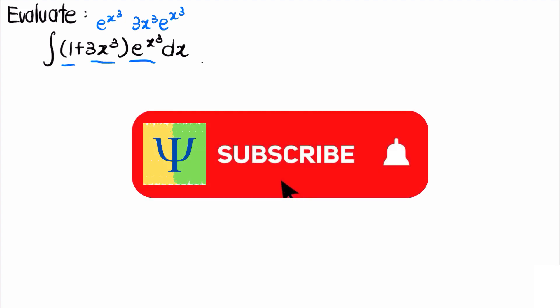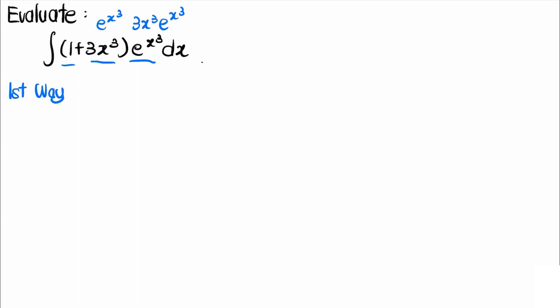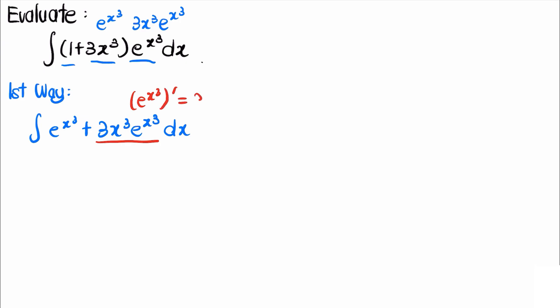The first way is to look at the second term of the integral — it looks similar to the derivative of eˣ³, which is 3x² times eˣ³ by the chain rule. But we are actually missing an x term there, and the first term is just eˣ³. This seems quite familiar to the form of the product rule.